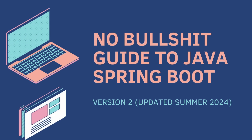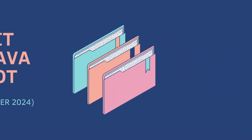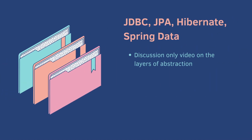Welcome back to the No Bullshit Guide to Java Spring Boot, Part 6. Today we cover JDBC, JPA, Hibernate, and Spring Data. This is a discussion-only video on the layers of abstraction — no coding.